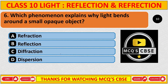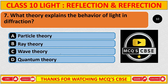Which phenomenon explains why light bends around a small opaque object? The correct answer is C: diffraction. What theory explains the behaviour of light in diffraction? The correct answer is C: wave theory.